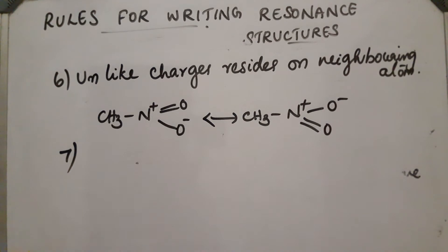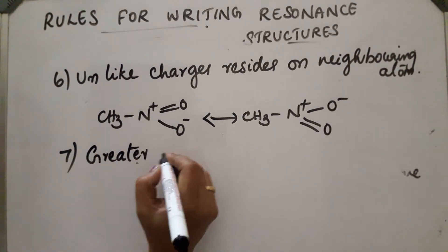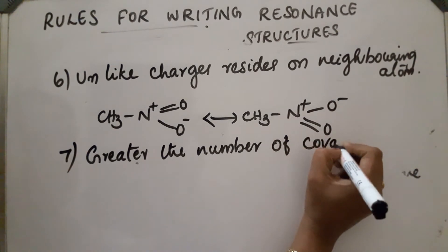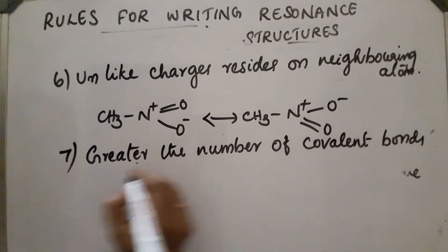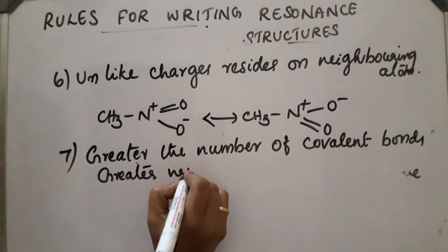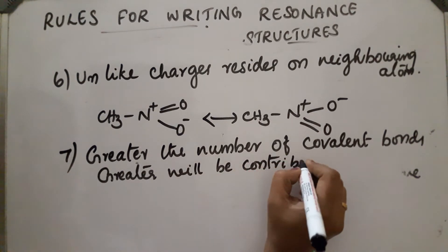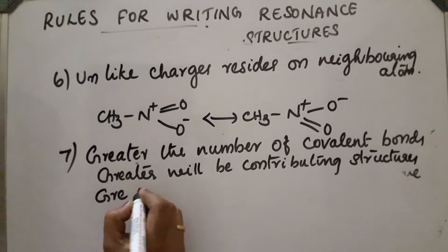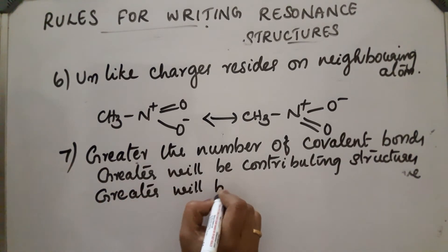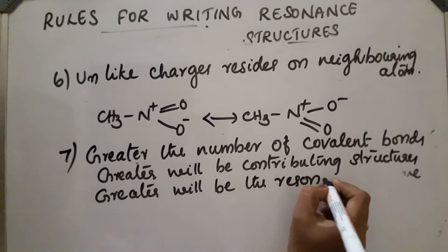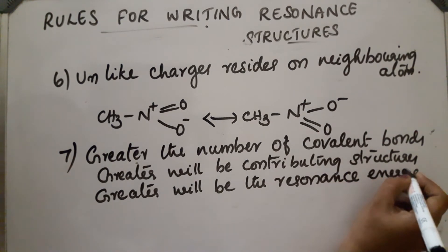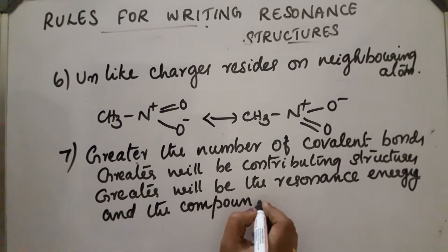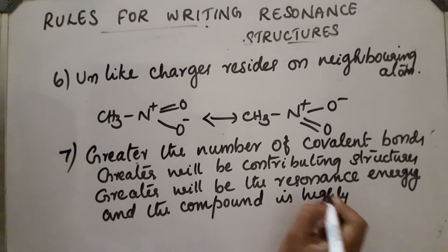Seventh rule: greater the number of covalent bonds, greater will be the number of contributing structures, greater will be the resonance energy, and the compound is highly stable. This is an important point.